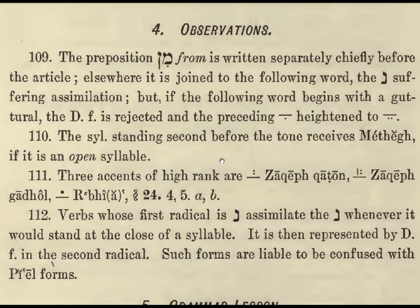Three accents of high rank: Zakif Katon, Zakif Gadol, and Ribinga. Verbs whose first radical is Nun assimilate the Nun whenever it would stand at the close of a syllable. We lose the Nun and it is replaced by Dagesh Forte, doubling the letter. Such forms, he notes, are liable to be confused with Piel forms, but we must have a letter — they are going to be confused with Piels.